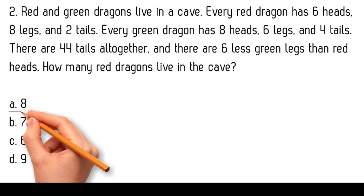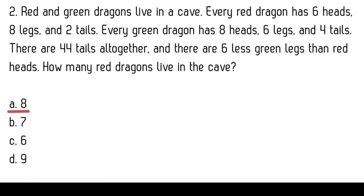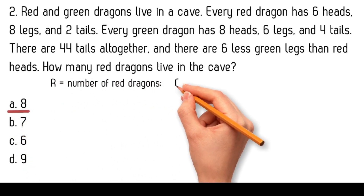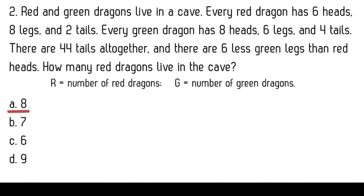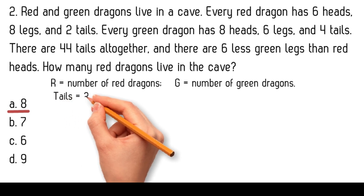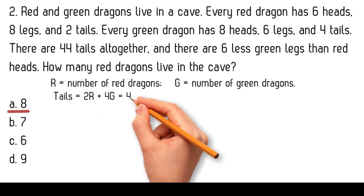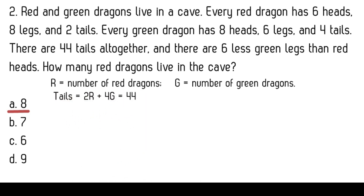Let's denote the number of red dragons as r and the number of green dragons as g. Every red dragon has 2 tails and every green dragon has 4 tails. So the total number of tails is: 2r plus 4g equals 44.